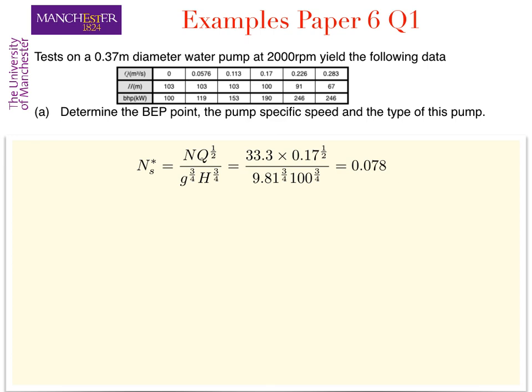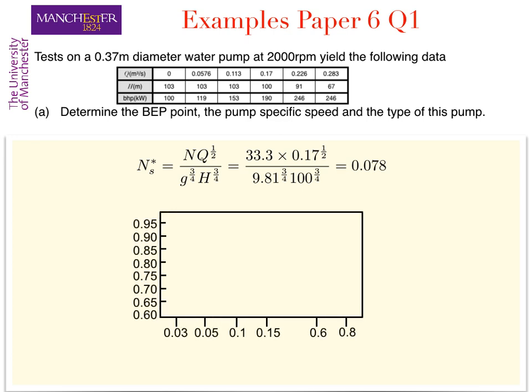From this we can then look at the graph of specific speed against efficiency which is shown here where the x-axis is the specific speed and the y-axis is the efficiency. The envelope is given here and we notice for this envelope the maximum efficiency occurs for a specific speed of 0.25.